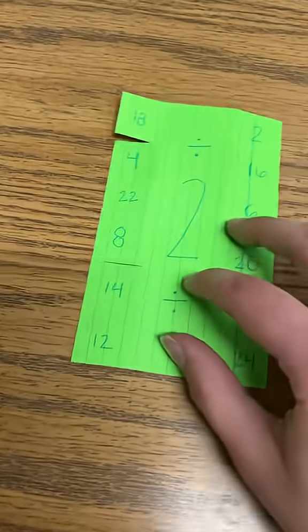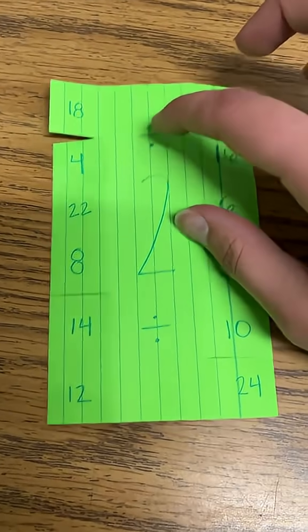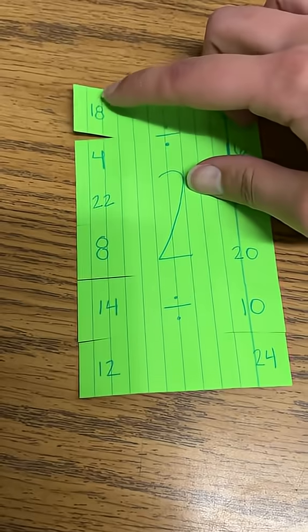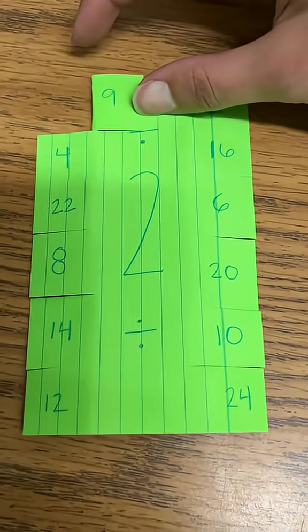Once they do that they will flip it over, write the number they're working with again, and now they're going to write division symbols because now you're going to use these numbers to divide by two to get the answer.